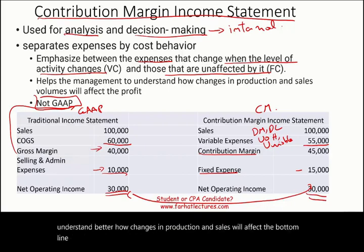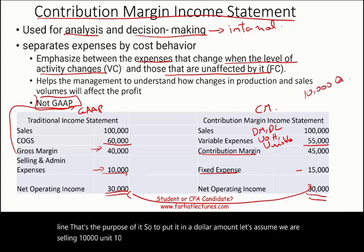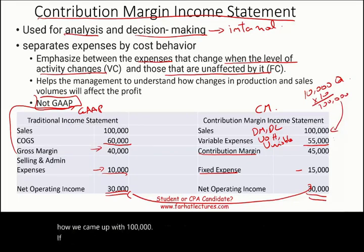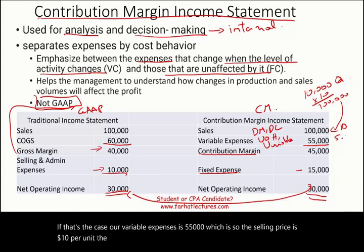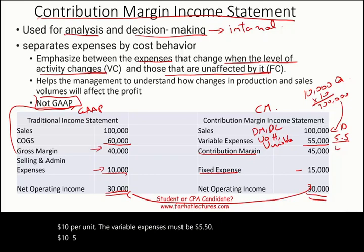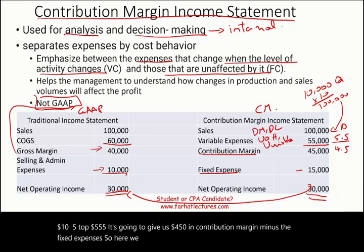The contribution margin helps management understand how changes in production and sales affect the bottom line. To put it in dollar amounts, let's assume we are selling 10,000 units. If we're selling 10,000 units at $10 each, that gives us $100,000 in sales. Our variable expenses are $55,000, meaning the variable cost per unit is $5.50. So $10 minus $5.50 gives us $4.50 in contribution margin per unit.